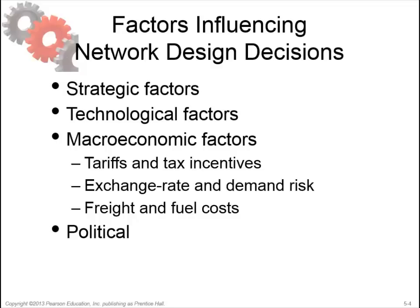Global supply chain networks can best support their strategic objectives with facilities in different countries playing different roles. For example, Zara has production facilities in Europe as well as in Asia. Its Asian facilities focus on low cost and primarily produce standardized, low-value products that sell in large amounts. European facilities focus on being responsive and primarily produce cutting-edge designs with unpredictable demand. This combination allows Zara to produce a wide variety of products in the most profitable manner.